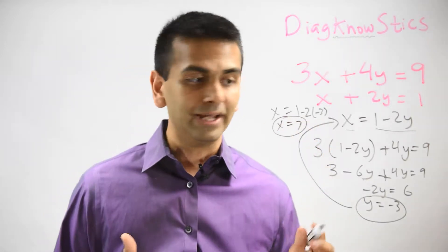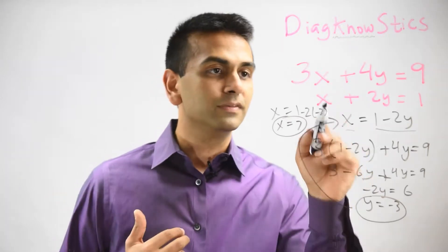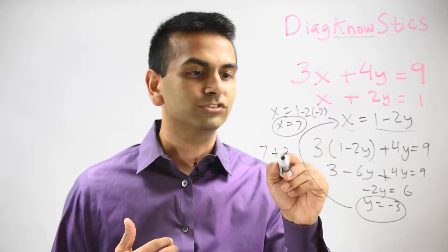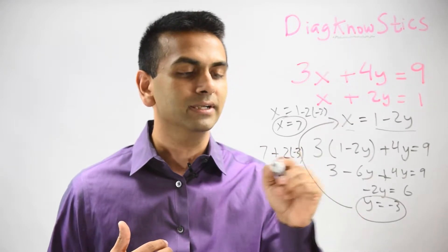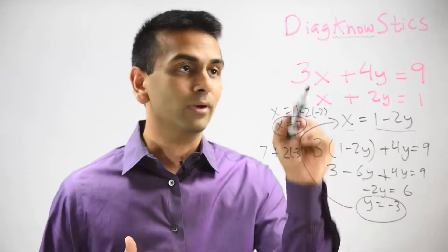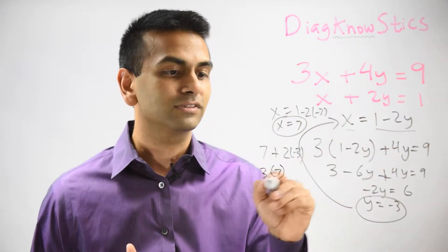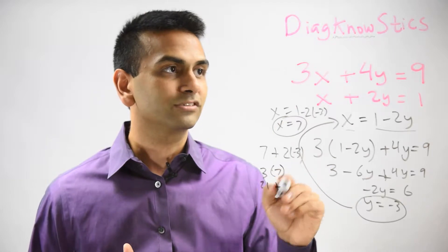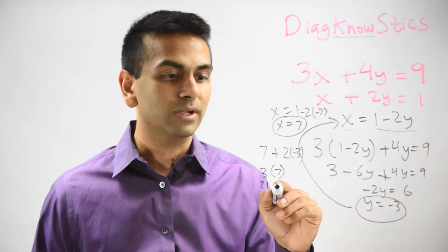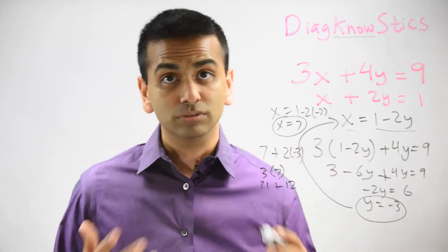Now you can check your answer by plugging the values into either equation — actually both should work. Checking the second equation: x is 7, plus 2y which is negative 3, so 7 minus 6 equals 1. That works. Checking the first: 3 times 7 is 21, plus 4 times negative 3 is negative 12, so 21 minus 12 equals 9. That's correct, so our solution works.